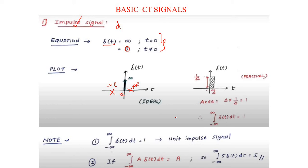In practice, consider a rectangular stripe having width δ (a very small value) and height 1/δ. The area of this rectangle is δ × (1/δ) = 1. So the area under the curve is 1, which is why it is called a unit impulse — the amplitude or area of the signal is 1.